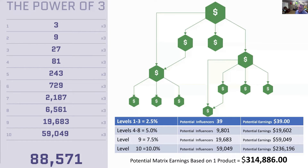Level nine is where it starts to get pretty big. There are 19,683 positions. If they each just buy one bag of Active Greens, we pay 7.5% — that's $3 per bag — which equals $59,049 just on the ninth level. Then level 10 has more than all the other levels combined: 59,049 positions. We pay 10%, that's $4 per bag, with 59,000 people — that's $236,196.